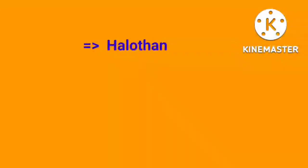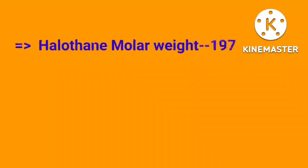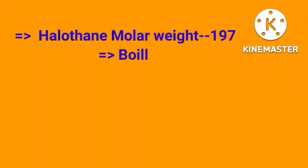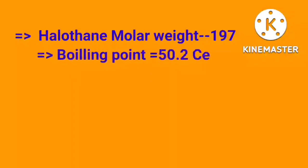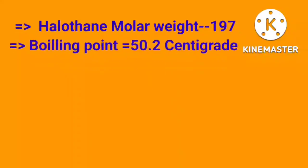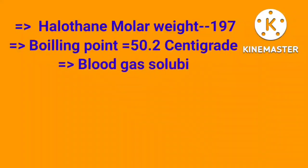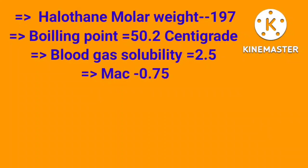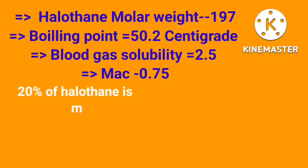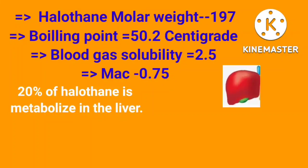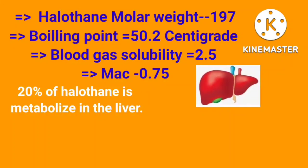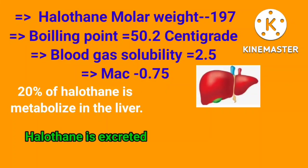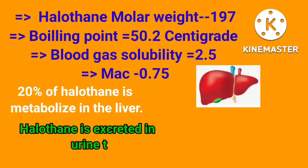Halothane molar weight is 197. Boiling point is 50.2 degrees centigrade. Blood gas solubility is 2.5, and MAC is 0.75. Metabolism: 20% of halothane is metabolized in the liver. Excretion: halothane is excreted in urine through the kidneys.